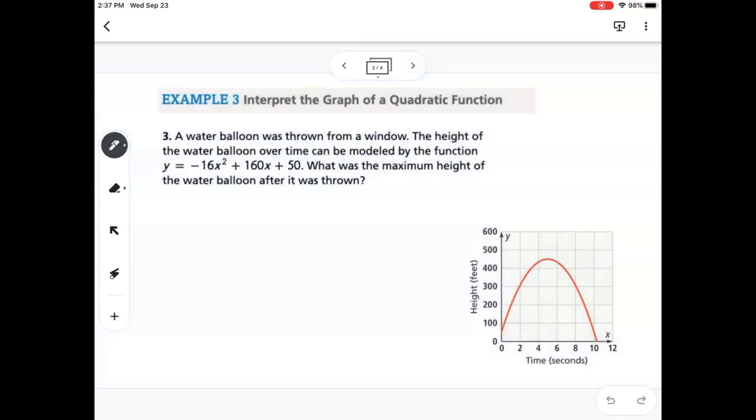Example 3 says a water balloon was thrown from a window. The height of the water balloon over time can be modeled by the function y equals negative 16x squared plus 160x plus 50. What was the maximum height of the water balloon after it was thrown?